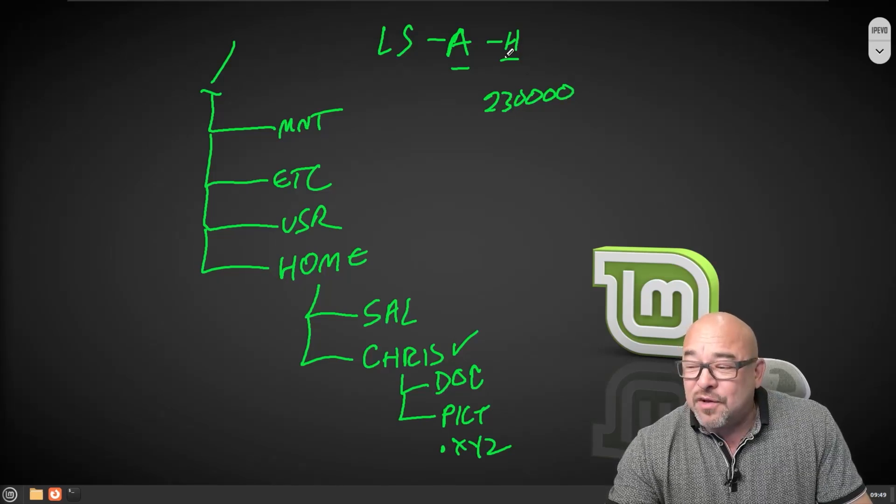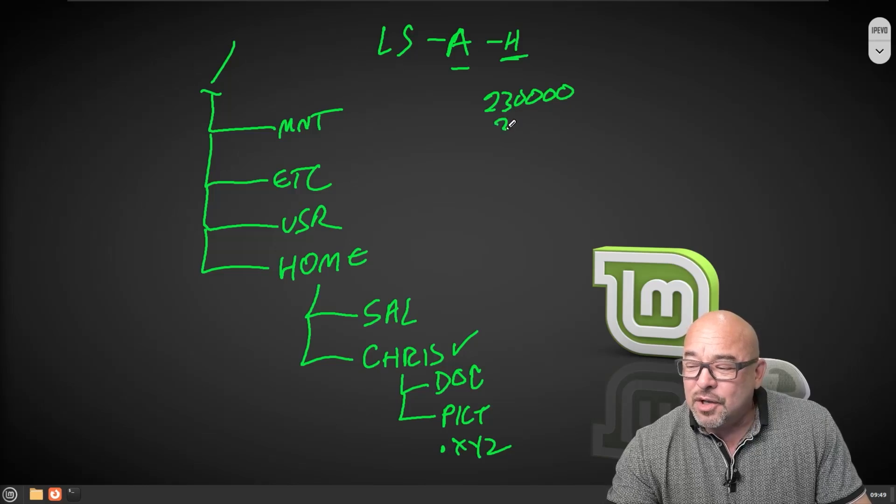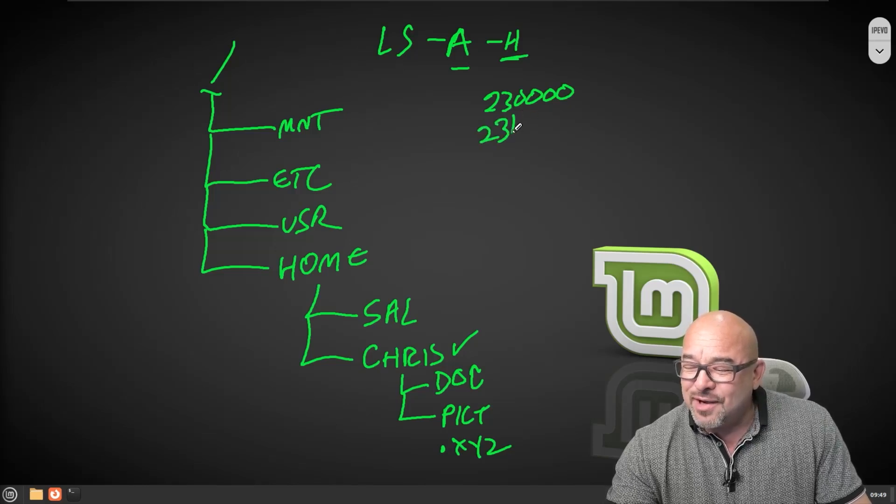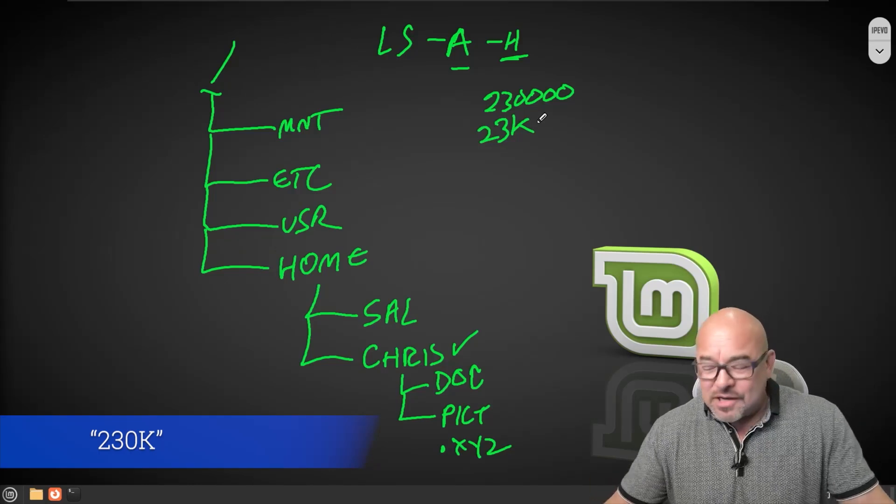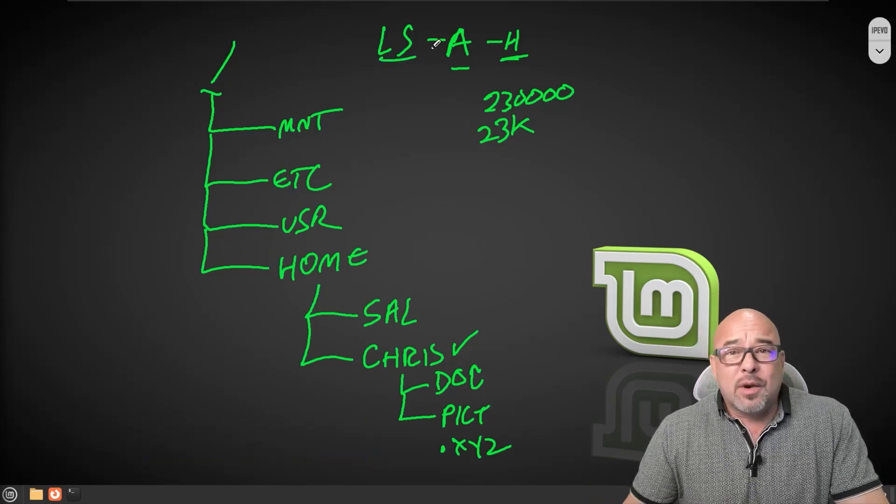Linux doesn't show that to you by default, but if you do the human readable form, that would be 23K. And I might show it to you that way instead and with megabytes and so forth.